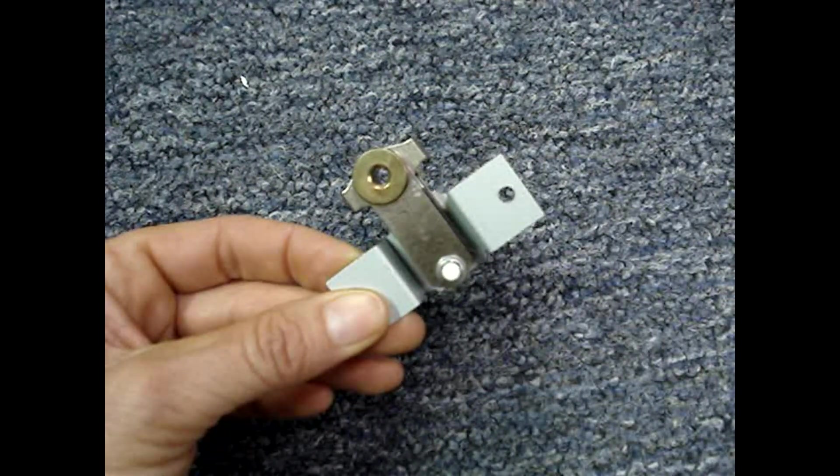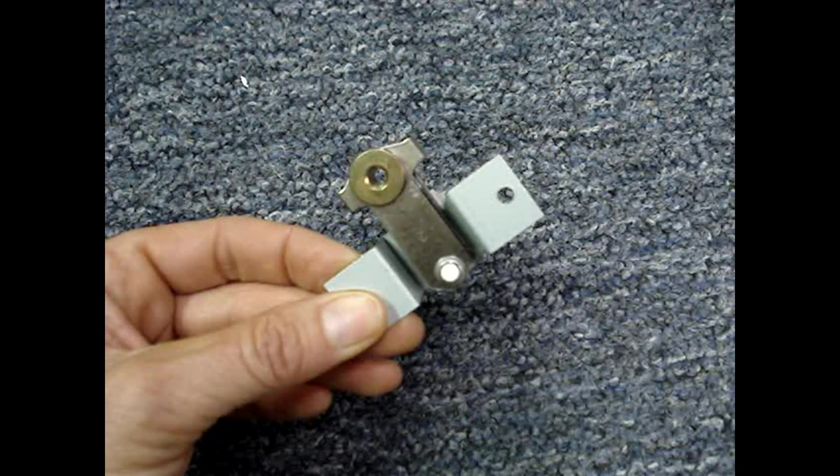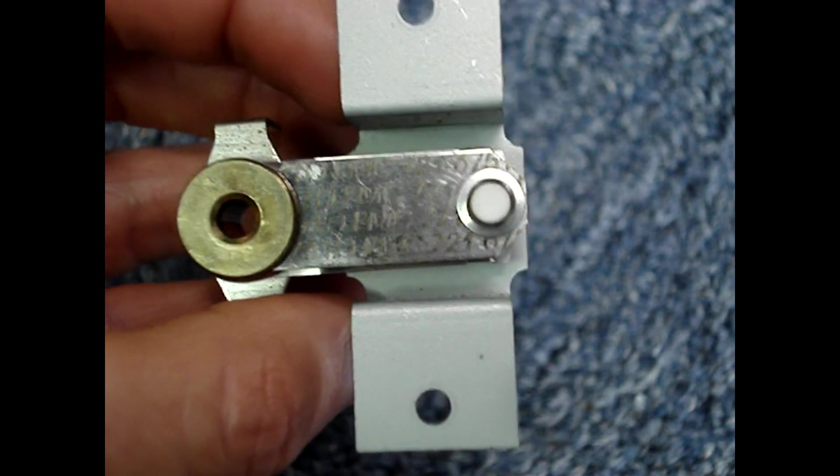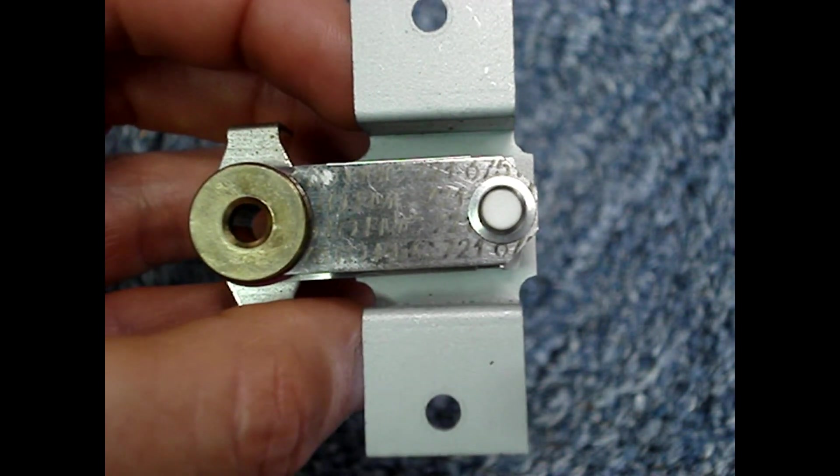On the bottom of the switch is a bi-metallic strip. It's two strips of different kinds of metal joined together that expand at different rates when heated.